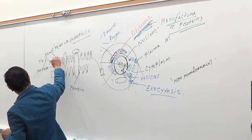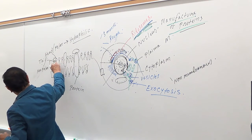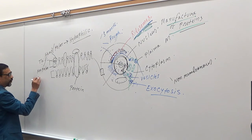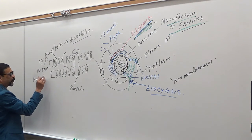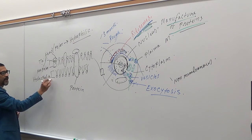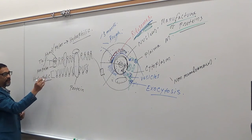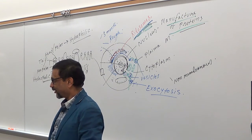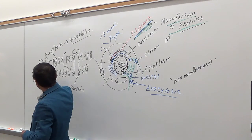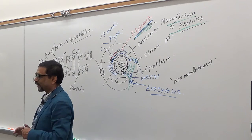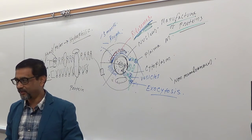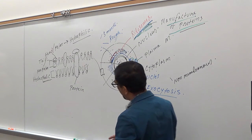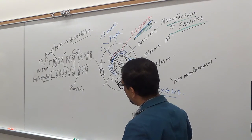The tail part is hydrophobic — phobia means scared or disliking. So the tail part dislikes water and is hydrophobic. So that is a phospholipid unit: head part is polar or hydrophilic; tail part is non-polar or hydrophobic.